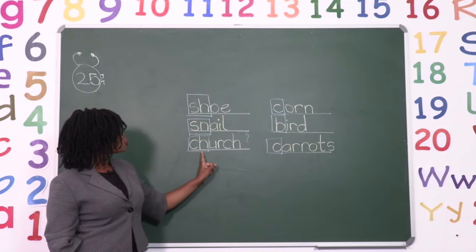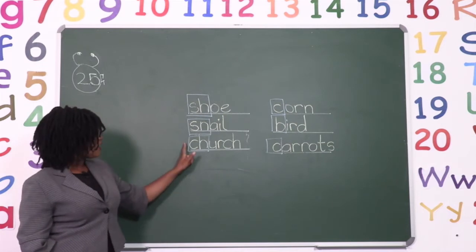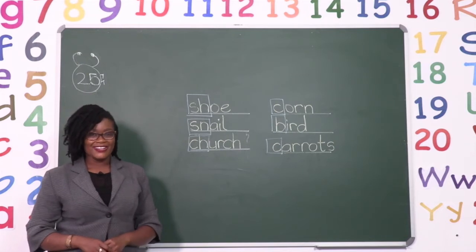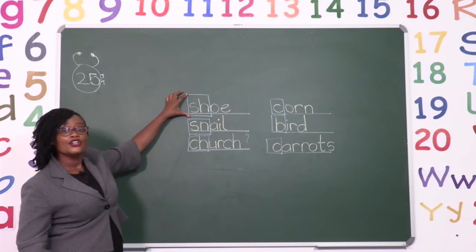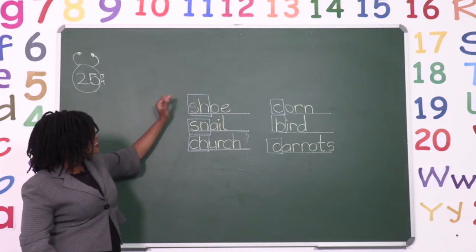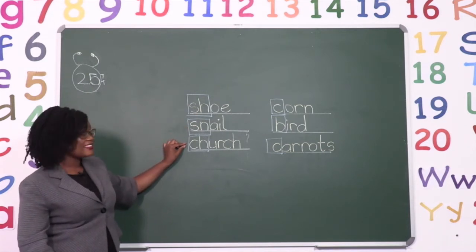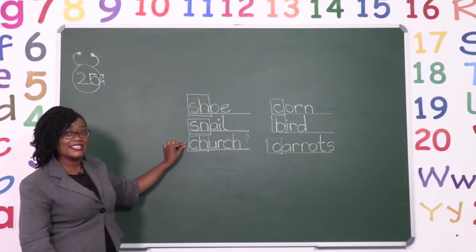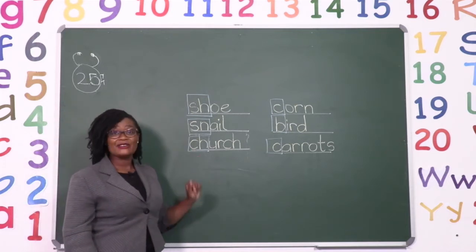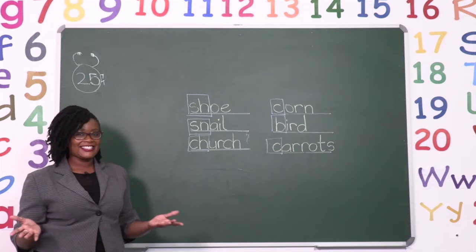Then we have our last one: church. The sound at the beginning of the word 'church' is 'ch'. Well done! So we have the beginning sounds: 'sh' — kind of like you're telling someone to keep quiet — then 'sn', and then 'ch'. Now that we know what the digraph sounds like, let's try and look for words that sound like the ones at the beginning.